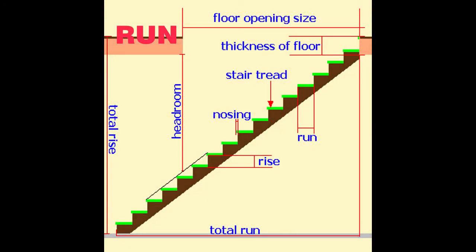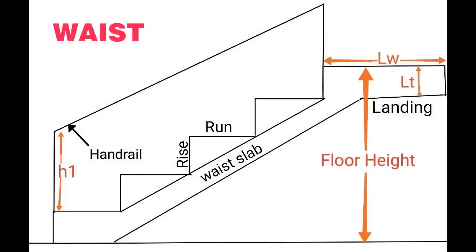Run. The total length of the stair in the horizontal plane, including the lengths of the landings, is known as the total run of the stair. Waist. The thickness of the RCC slab over which the steps of RCC rest is known as waist. These are also known as waist slabs.